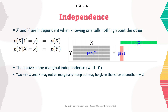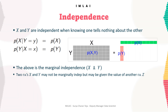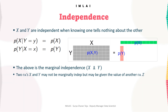Independence of marginalized probability distributions is a useful property in many applications, as it allows us to simplify complex probability distributions and make certain assumptions in statistical models. For example, in linear regression we assume that the error terms are independent and identically distributed, which implies that the marginal probability distributions of the errors are independent. This assumption simplifies the model and allows us to use methods such as maximum likelihood estimation to estimate the parameters of the model.